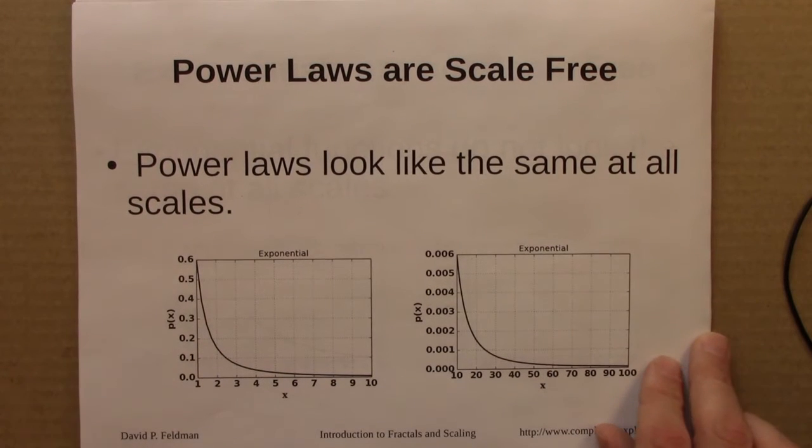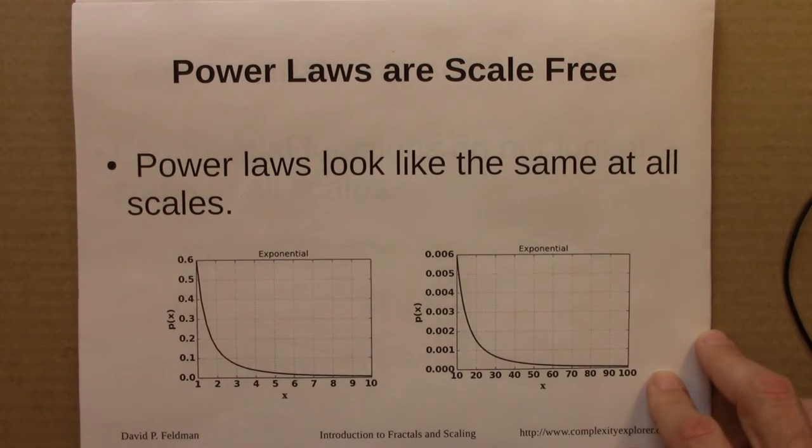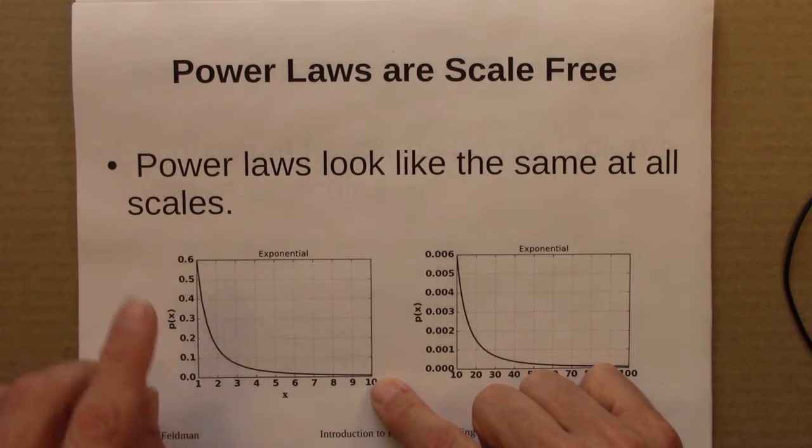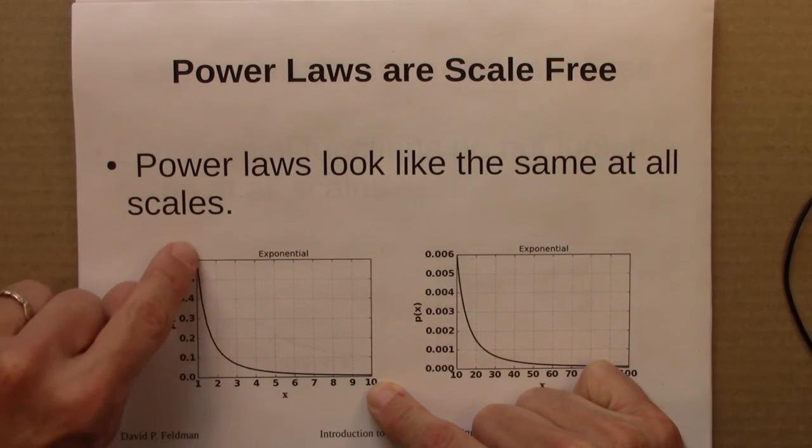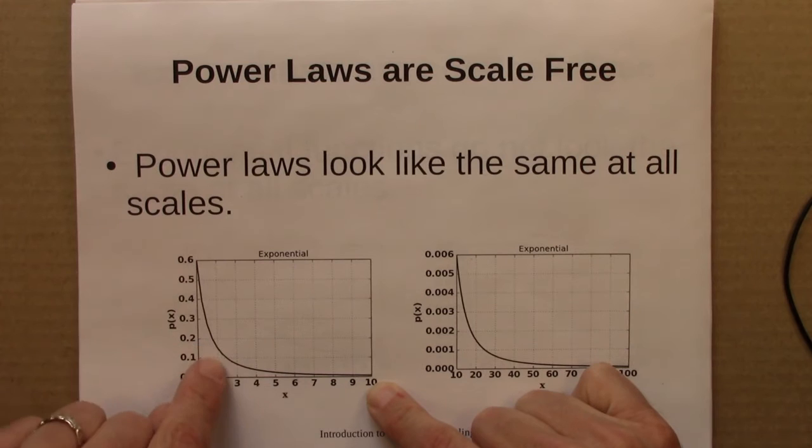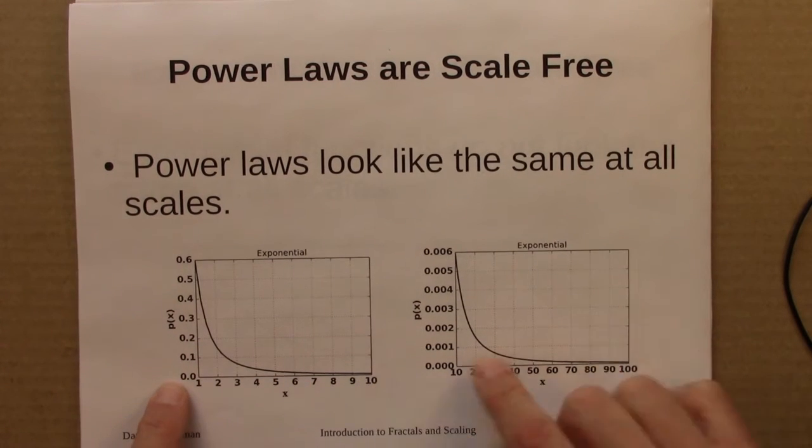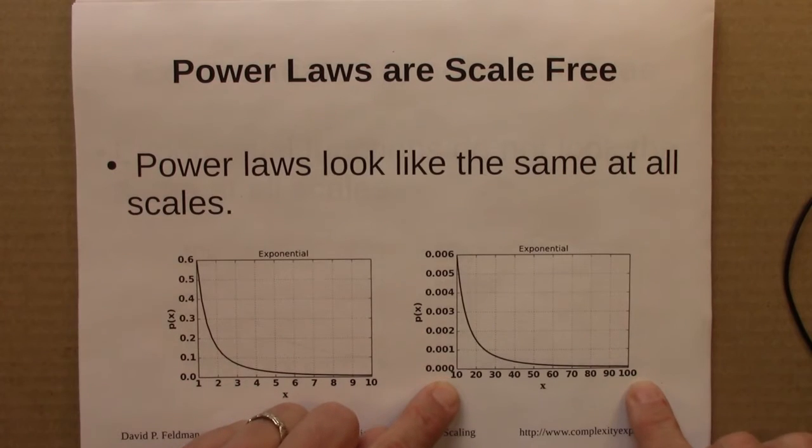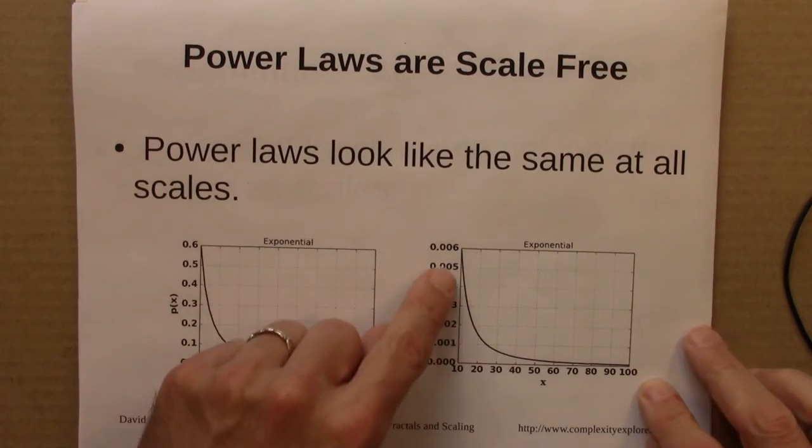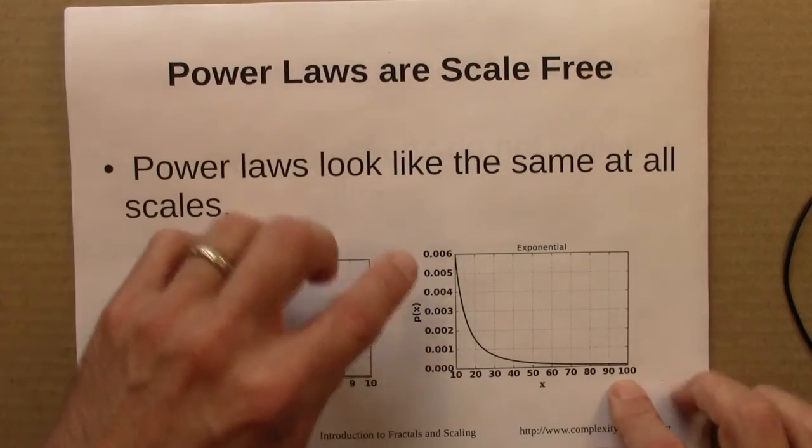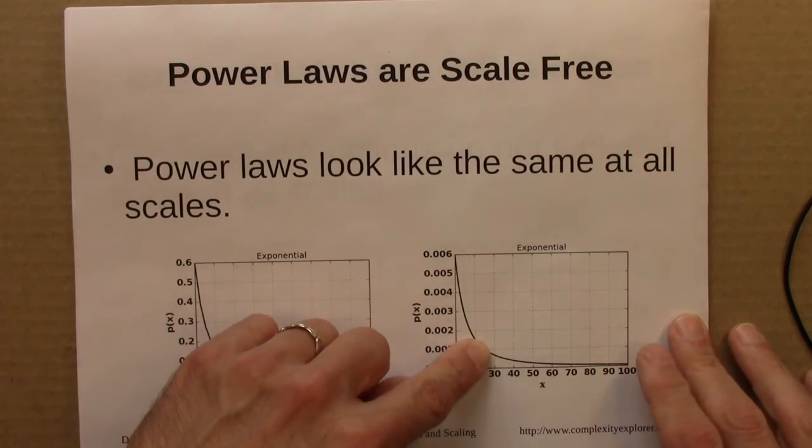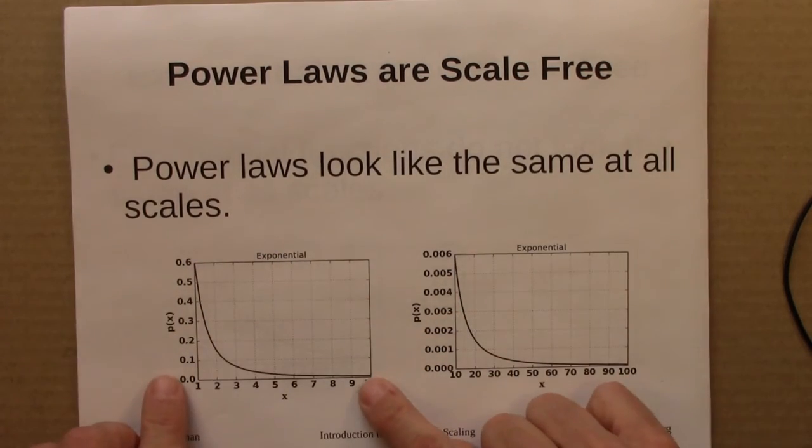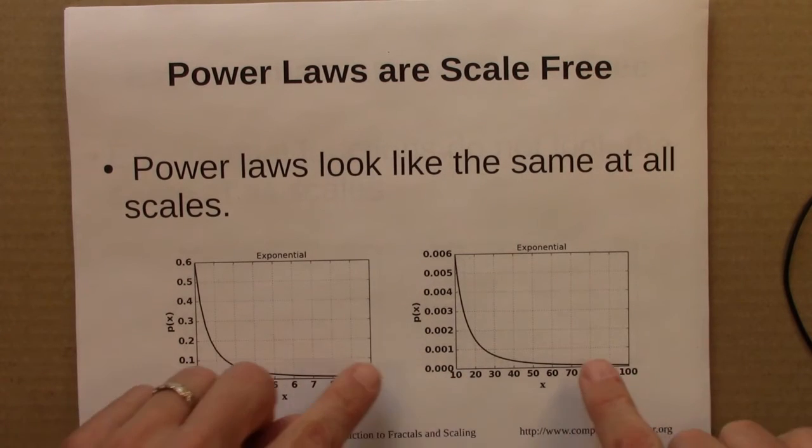Another interesting feature of power laws is that they're scale-free. They look the same at all scales. So if you rescale a power law, you get a power law. Here is the power law from x equals 1 to 10. And we see that as x gets larger, the probability is smaller. Here is the same power law from 10 to 100. And we see that as x gets larger, the probability gets smaller in just the same way as it did from here. So this is an example of self-similarity.